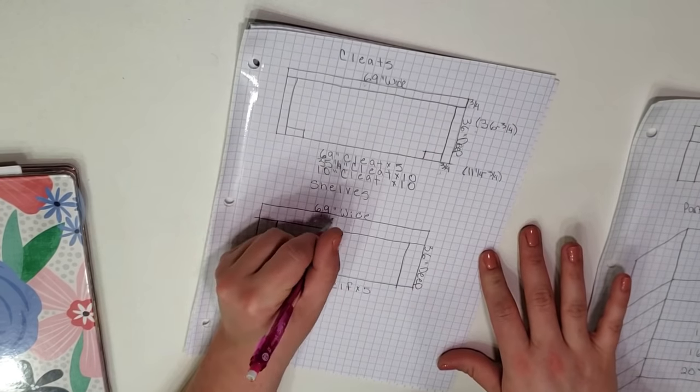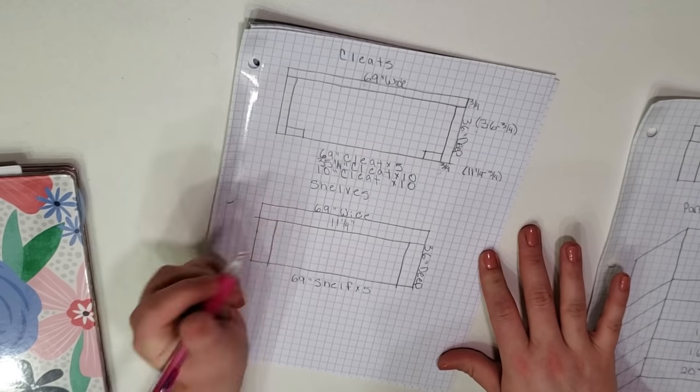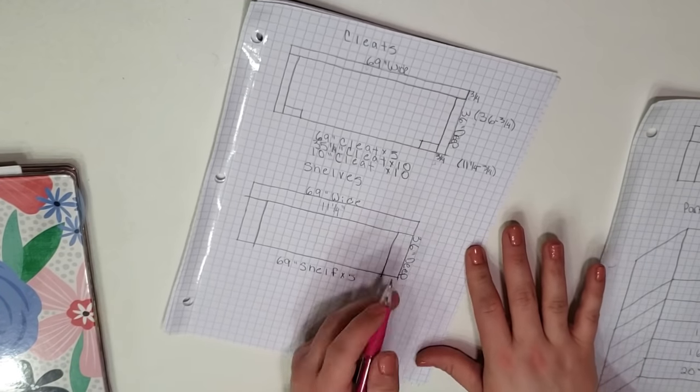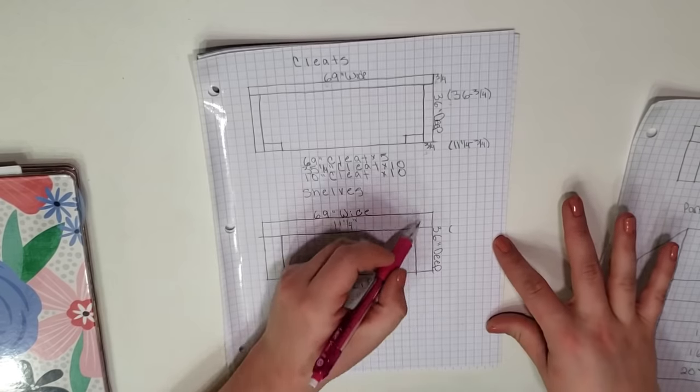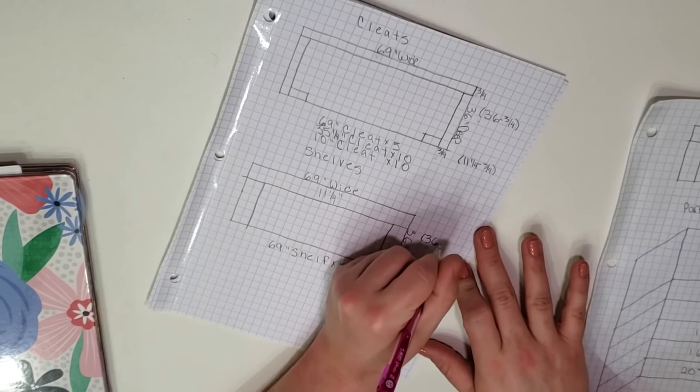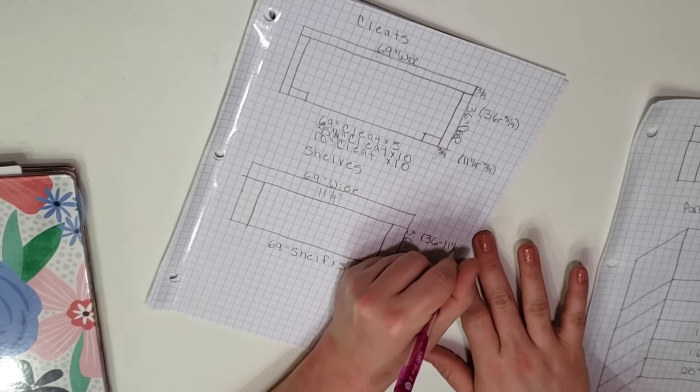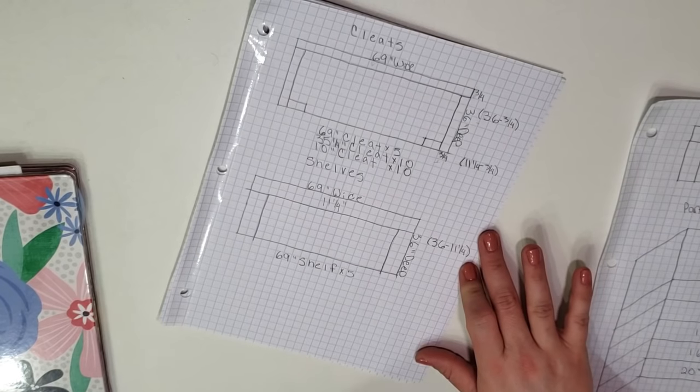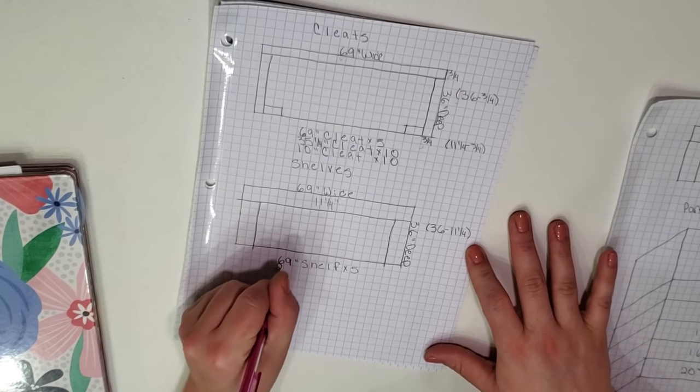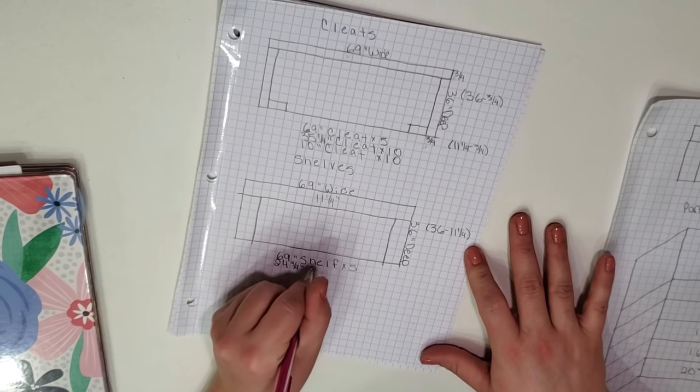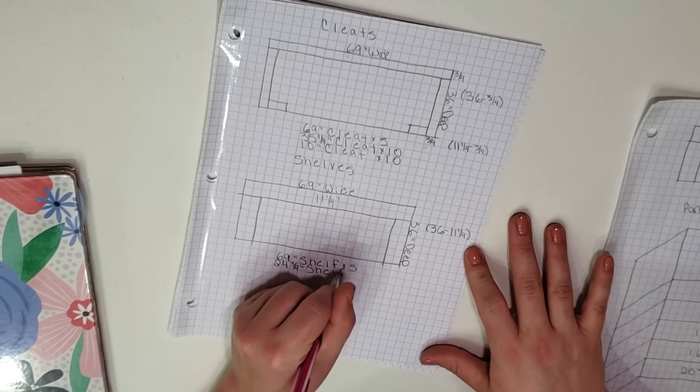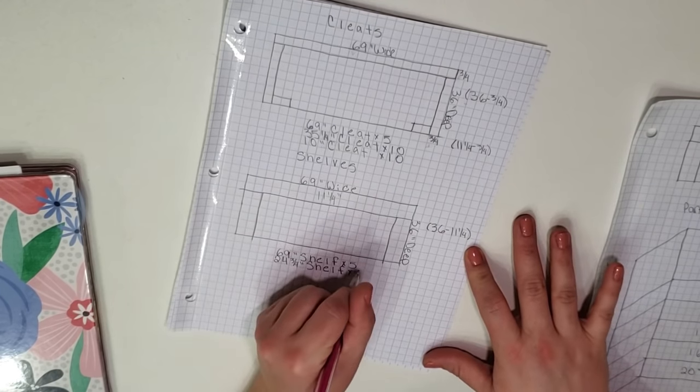On both sides I will need a piece that fits joined up to the front of the back shelf. Subtract the 11 and a quarter inch depth of the back shelf from the 36 inch wide side wall and I will need a 24 and three quarter inches wide side piece for my shelves.